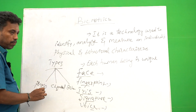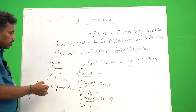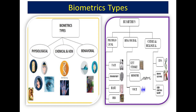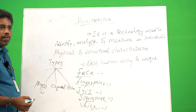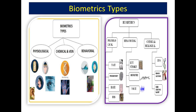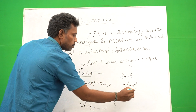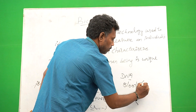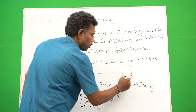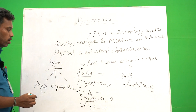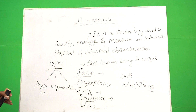The first one is physical — physical means face, then fingerprint, then iris. Then after, chemical. Chemical means the basic information, like DNA. DNA is one example for that. Another one is blood glucose. These are all different from each human being.